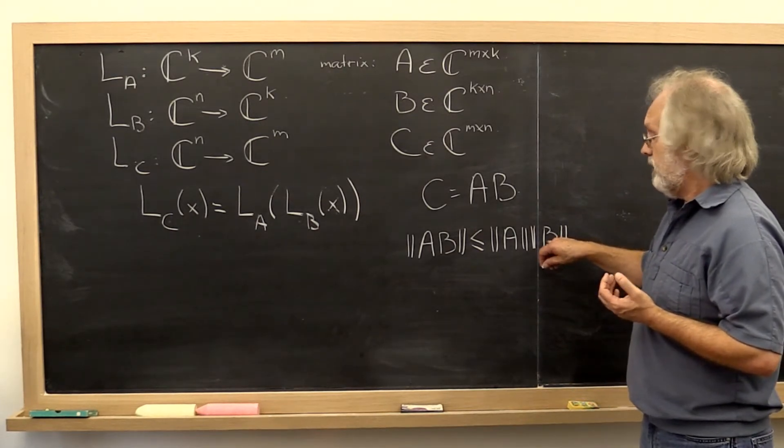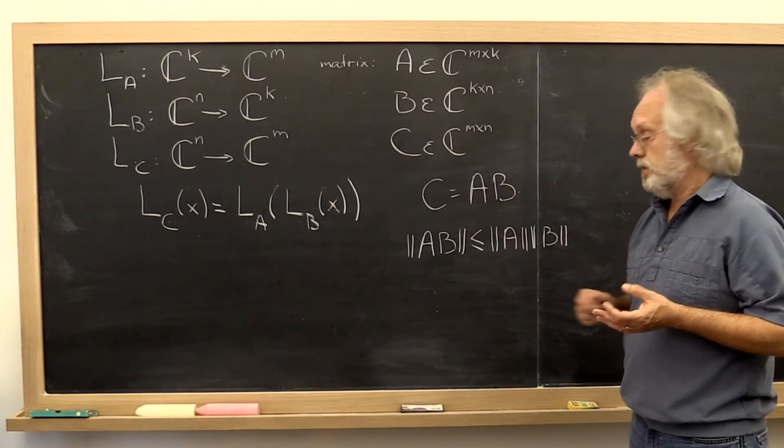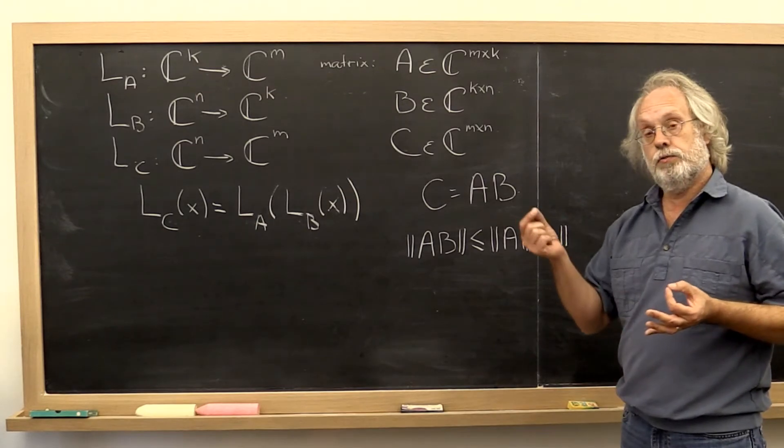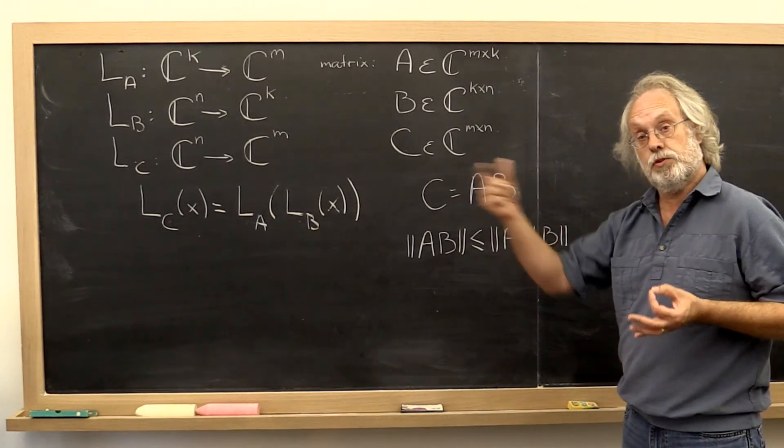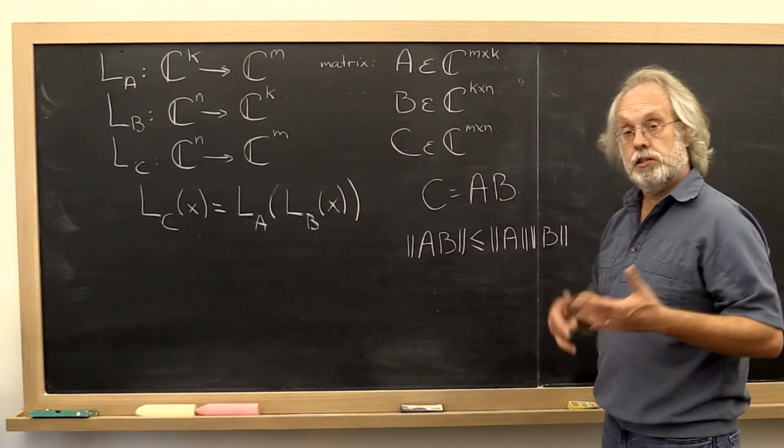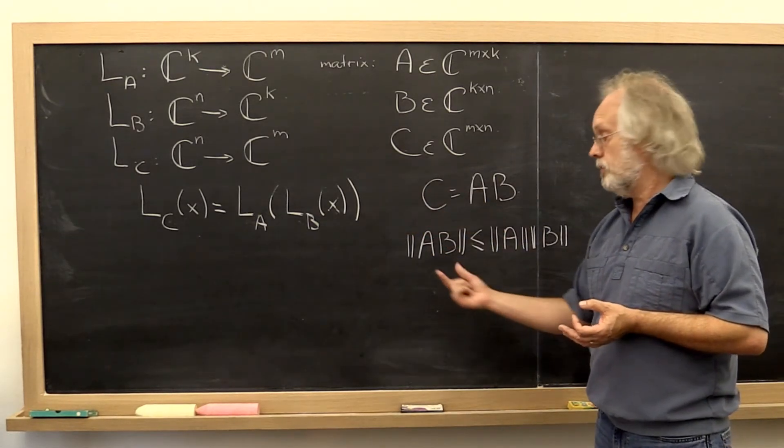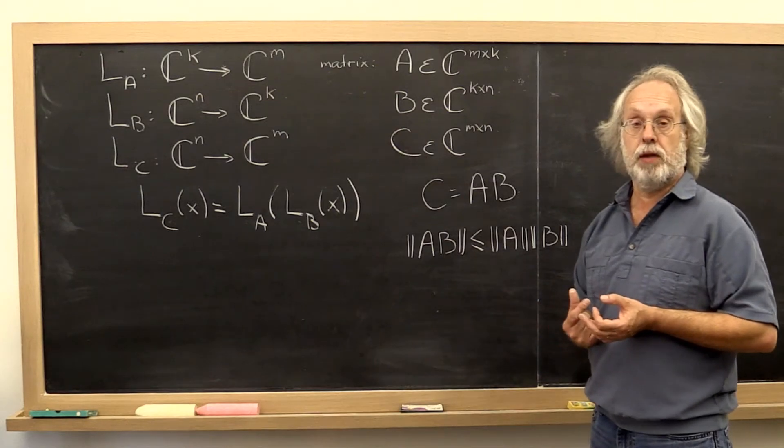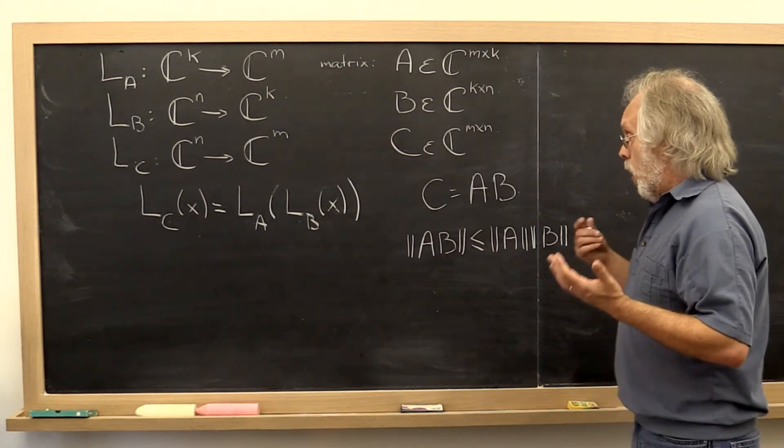The norm of B measures the maximal stretching that B can do. The norm of A measures the maximal stretching that A can do. Multiply them together. We want something bigger than the net stretching that the matrix that results from multiplying A times B does.